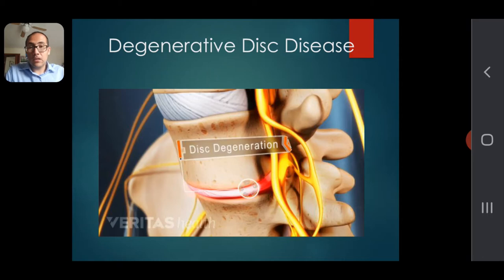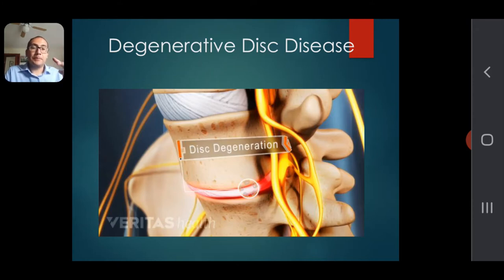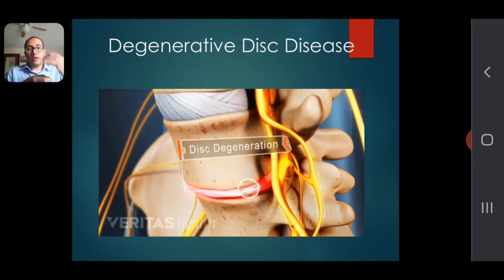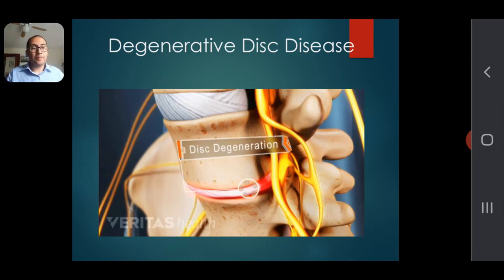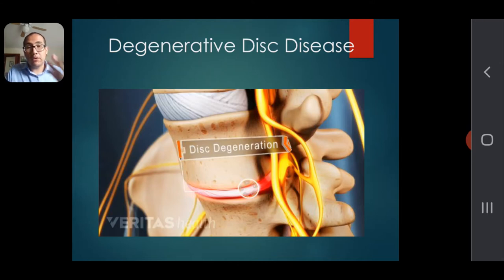Degenerative disc disease is common in age-related conditions — the older one gets, the more likely they are to experience it. It's a type of degeneration or degrading of the disc between the vertebrae. The vertebrae stack on top of each other protecting the spinal cord, and these discs act as cushioning that allows movement. With this condition, the disc starts to degenerate, so the sponginess starts decreasing.